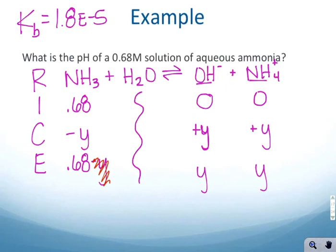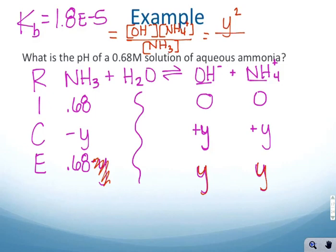The Kb is 1.8×10^-5, and that's going to equal the hydroxide ion concentration times the conjugate acid concentration divided by the base concentration. The hydroxide ion concentration is y, the ammonium concentration is also y, so we have y² divided by the starting concentration of the ammonia which was 0.68. y² is going to be equal to 1.8×10^-5 times 0.68, and you get 1.22×10^-5.